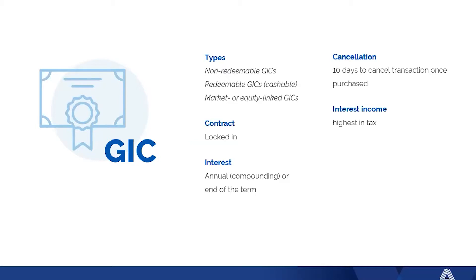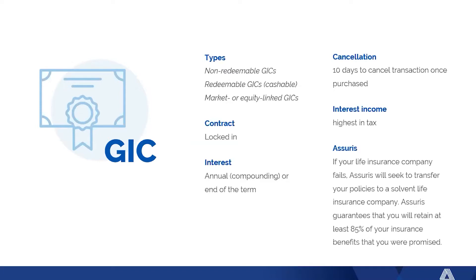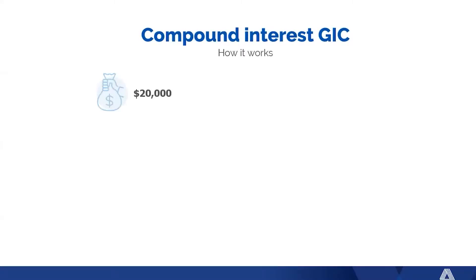When you buy a GIC in a non-registered account, it is interest income — the highest taxed way to earn income. There are three ways to make money: interest income, dividends, and capital gains. Interest income from a GIC is the highest tax you're going to pay. Assurist is the company that guarantees the GIA, so if an insurance company goes bankrupt, your money in the GIC is guaranteed. So basically, if you purchase a $20,000 GIC for three years, your money is locked in — you cannot get out of the contract, though some companies allow you to exit with a penalty.